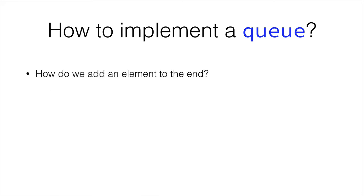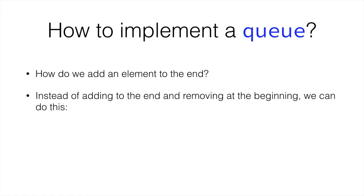But how do we add an element to the end? Because our queue right now is adding elements to the beginning. Well, instead of adding to the end and removing at the beginning, we can save ourselves some work and add at the beginning and remove at the end. Doing the same but in the inverse, so that we can use the method for adding we've already got programmed.